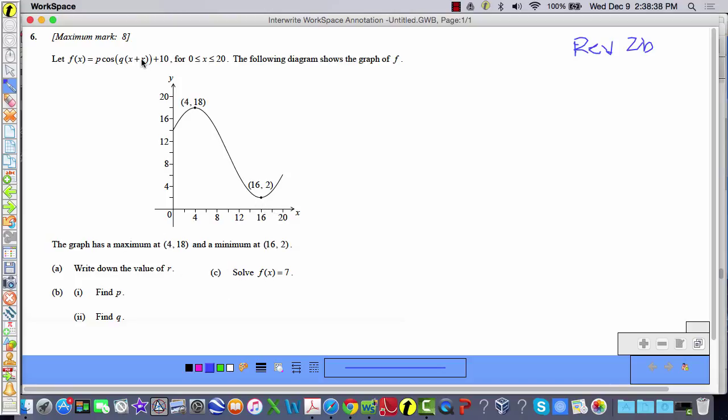So write down the value of r. Well, with any function, a constant housed within parentheses with the variable x causes a horizontal shift. If you think of the cosine curve, your basic y equals cosine x starts out at 1 at the very top and then goes down. Well, here's that point, that maximum point where it really starts. And usually it hits the y-axis unless there's a horizontal shift, which there is.